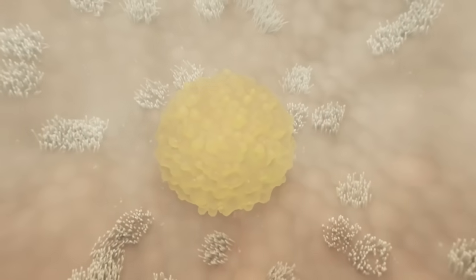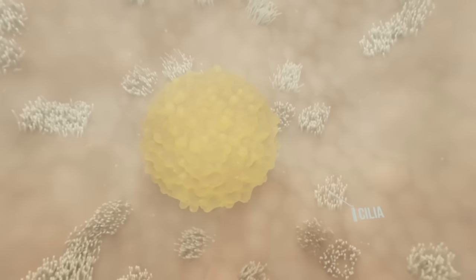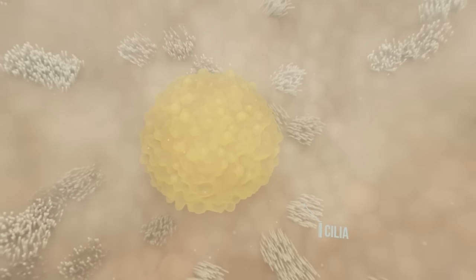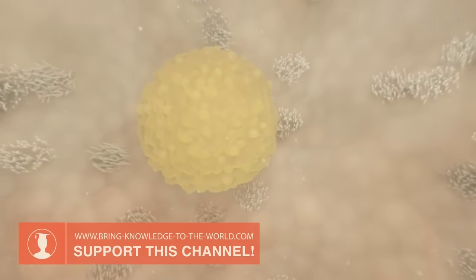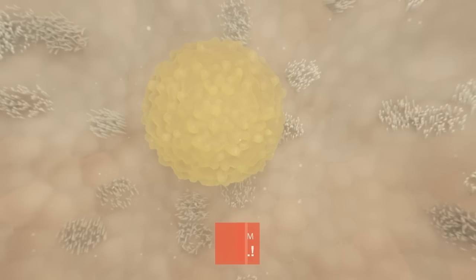The egg cell is transported inside the fallopian tube with the help of cilia and mucus produced by glands in the walls of the fallopian tube. Additional contractions of the muscle layers help to transport the ovum.